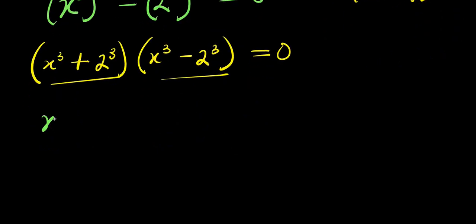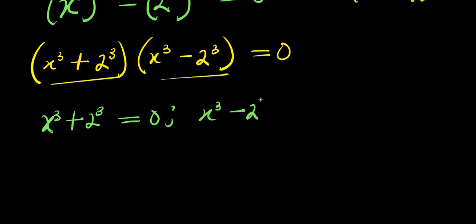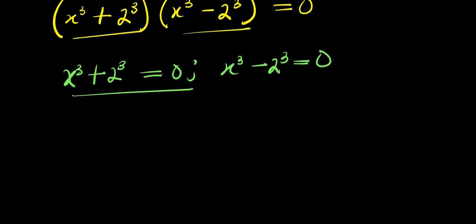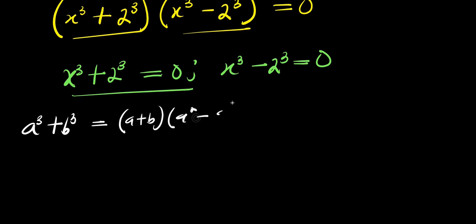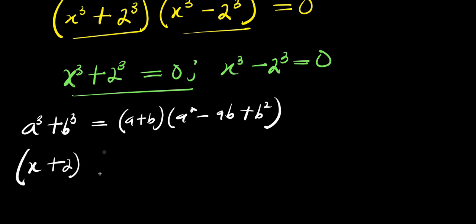So we have two equations: x power 3 plus 2 power 3 equals 0, and x power 3 minus 2 power 3 equals 0. Let's solve the first equation using the sum of cubes identity: a cubed plus b cubed equals a plus b times a squared minus ab plus b squared. Our a is x, b is 2, so we have x plus 2 times x squared minus 2x plus 4.